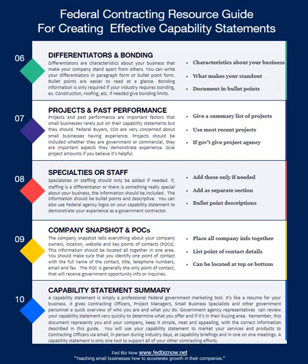Number six: differentiators and bonding. If you have special things that make you different from your competition, create a section labeled 'Differentiators' and explain why you're different. If you're in an industry where bonding is required, create a section for that as well — just a key title that says 'Bonding and Insurance,' because that could be a huge concern for some federal buyers.